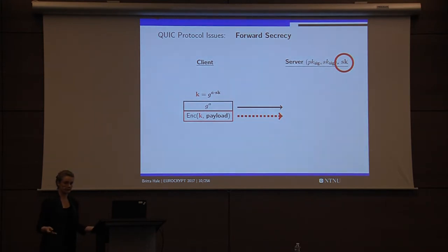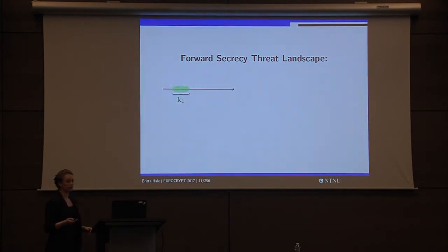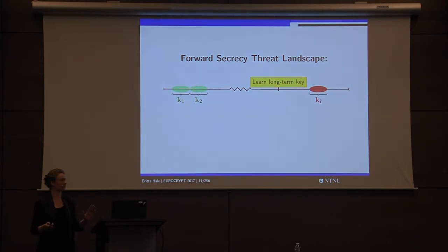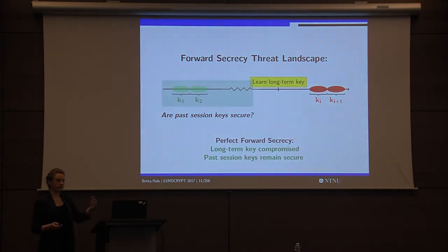This is a version of what's known as forward secrecy. The forward secrecy landscape says we have some initial sessions, and then sometime later — after these session keys have been used and completed — an adversary compromises the long-term key. In terms of forward secrecy, we're really concerned about what happens before that: are those session keys still safe? Forward secrecy says if those session keys remain safe even when the long-term key is compromised, then we have forward secrecy.